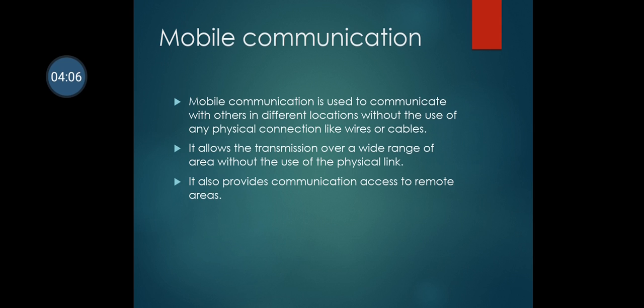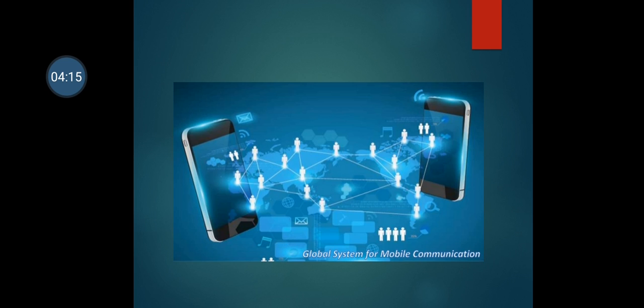Mobile communication is used to communicate with others in different locations without the use of any physical connection like wires or cables. It allows the transmission over a wide range of area without the use of physical links. It also provides communication access to remote areas.